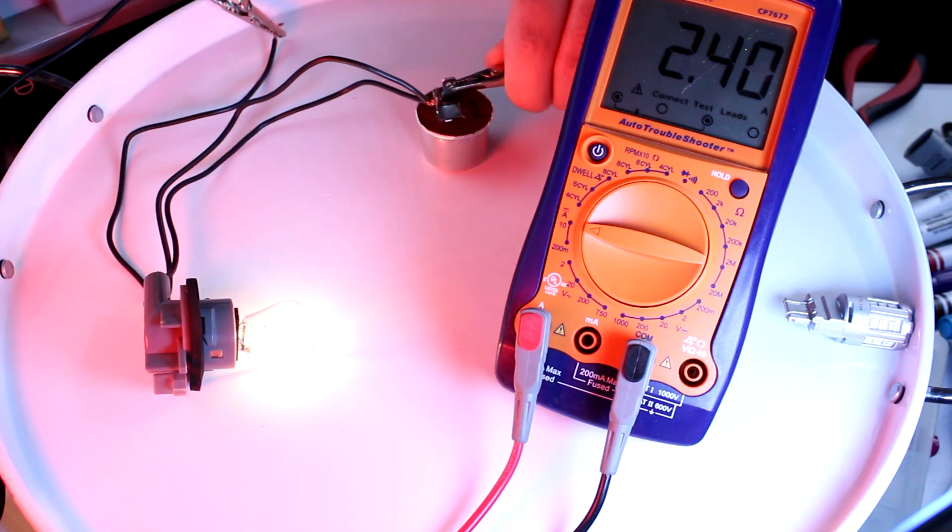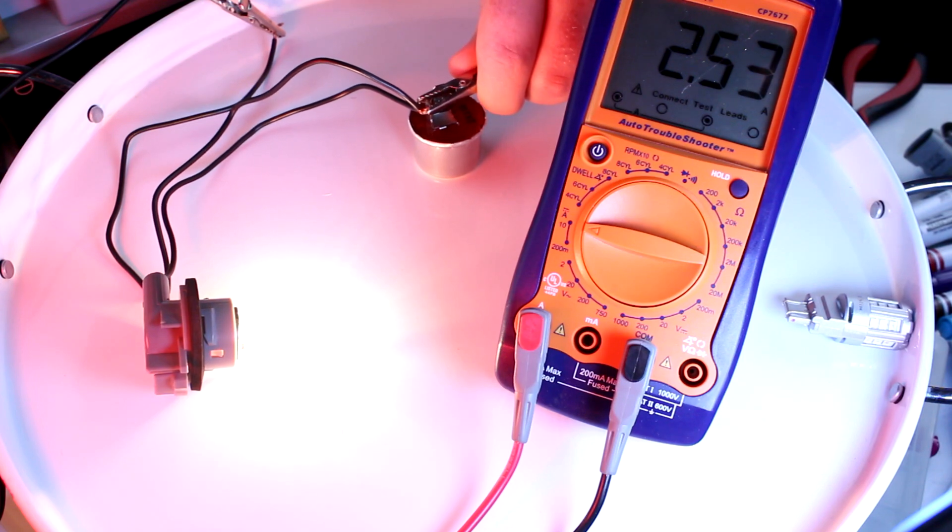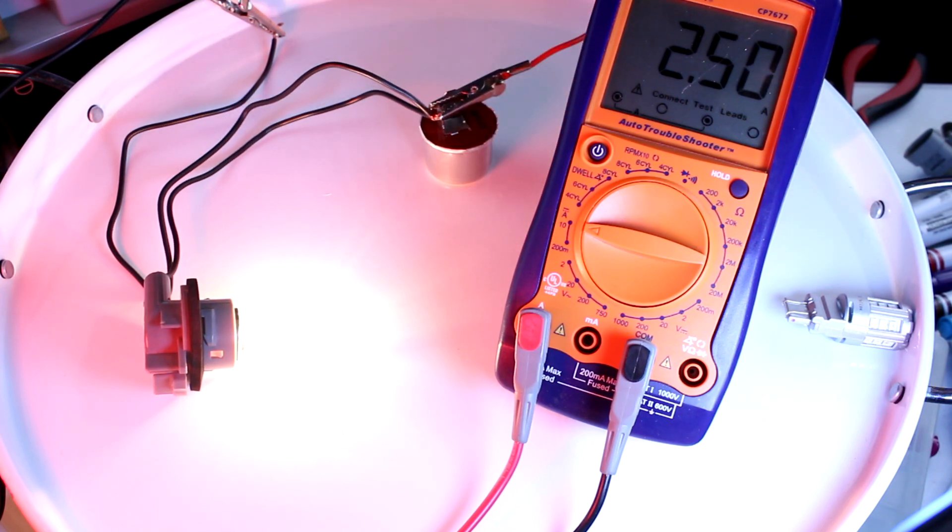If I bypass the thermal flasher, it just stays on. And we currently have about 2.5 amps.